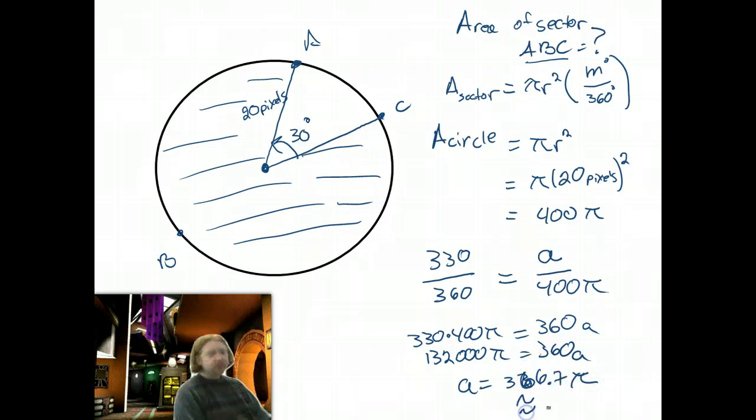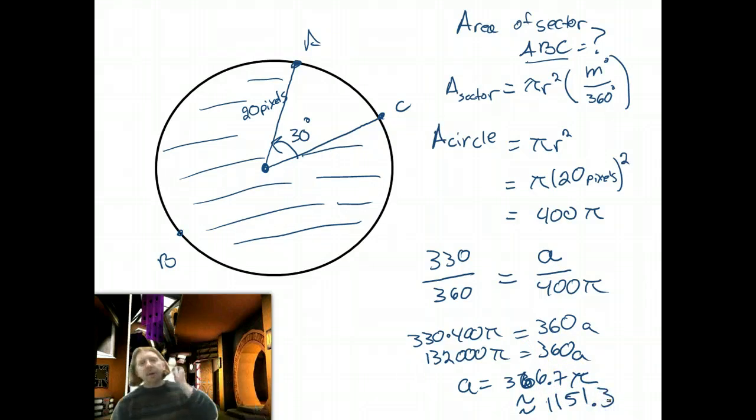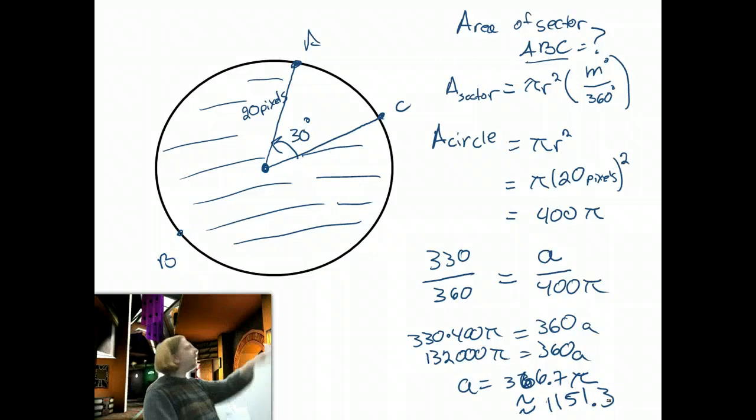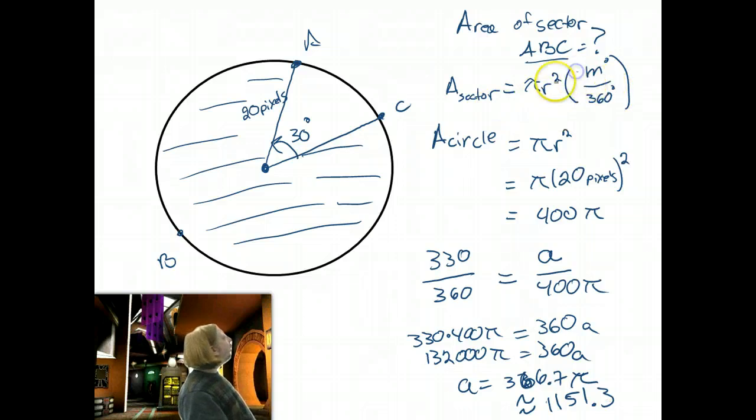I get an answer of 366.7 pi, which times 3.14 is 1151.3. And that would be the area in square pixels that make up the shaded region, sector ABC.